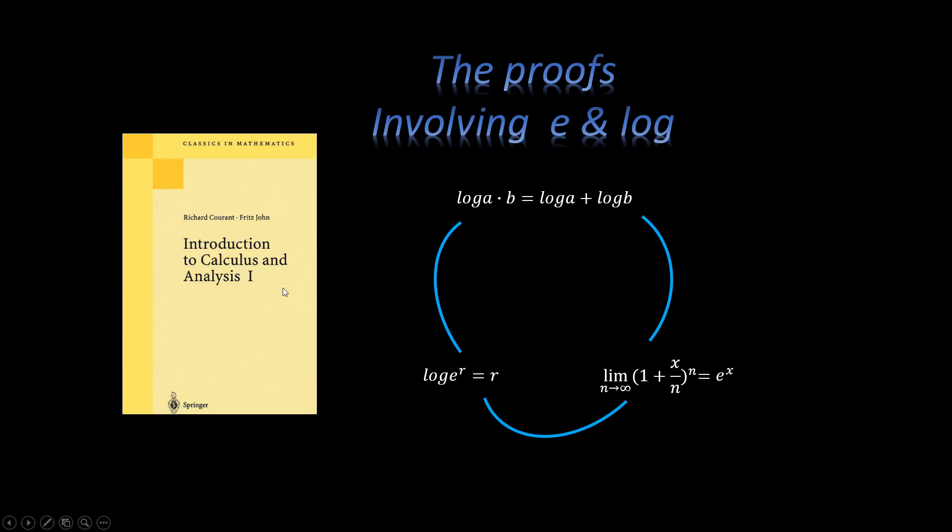In this video, I want to talk about the proofs regarding E and log. The relationships used are a bit confusing, so I want to organize their sequences. It's based on the calculus book by Richard Courant. The property of log is critical in the proofs. First, let's be clear what needs to be proved.